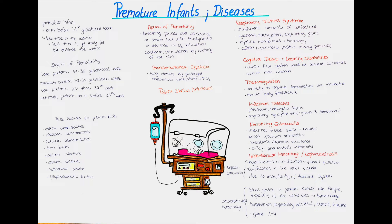If there is a big baby or the mother gives birth to twins, that's also a risk factor. Certain infections, chronic diseases like diabetes, preeclampsia or eclampsia — which basically means hypertension in the mother — are risk factors. There is also gestational diabetes, where the mother develops diabetes because of the pregnancy.